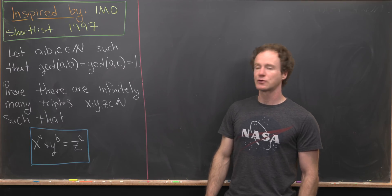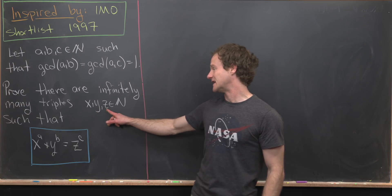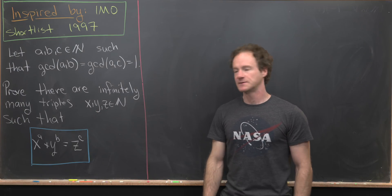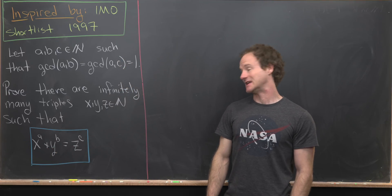And what we want to do is prove that there are infinitely many triples X, Y, Z, which are natural numbers, such that X to the A plus Y to the B is equal to Z to the C.